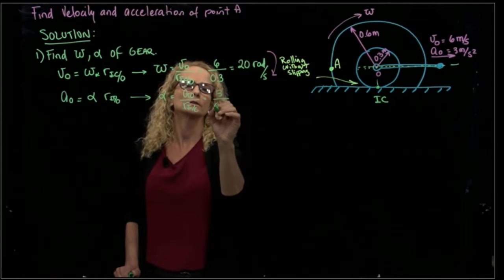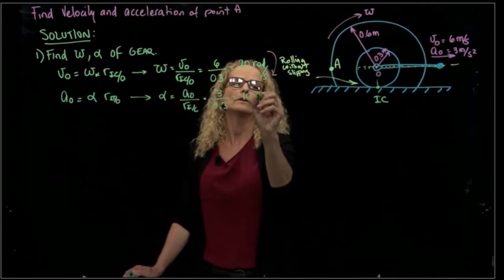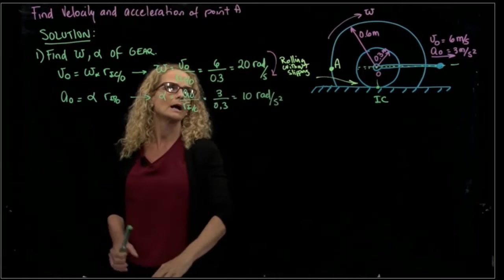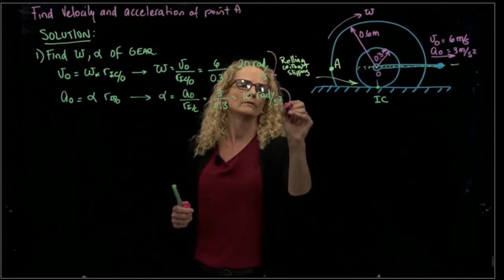So alpha will be equals to that acceleration divided by that distance, 3 over 0.3. That gives me an angular acceleration of 10 radians per second squared. And actually is also negative value.